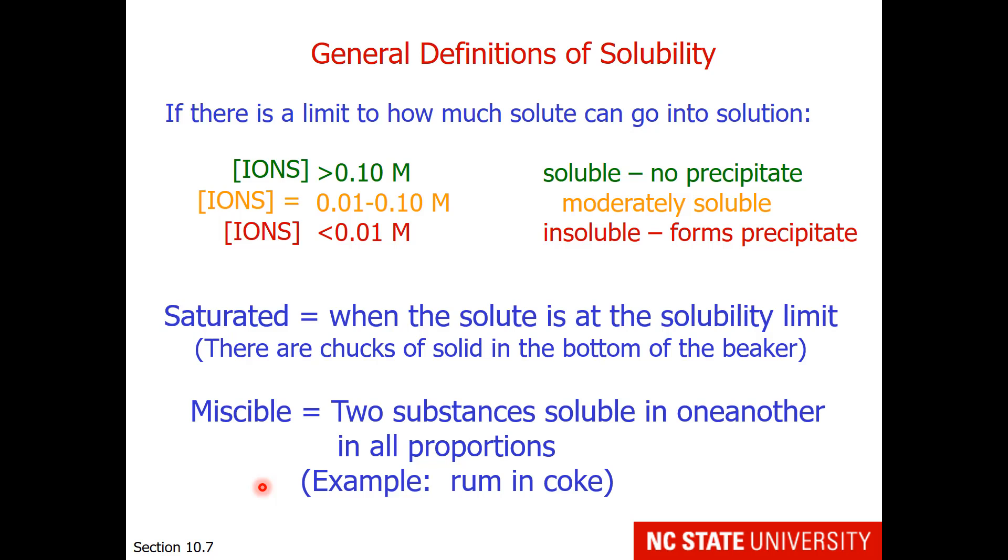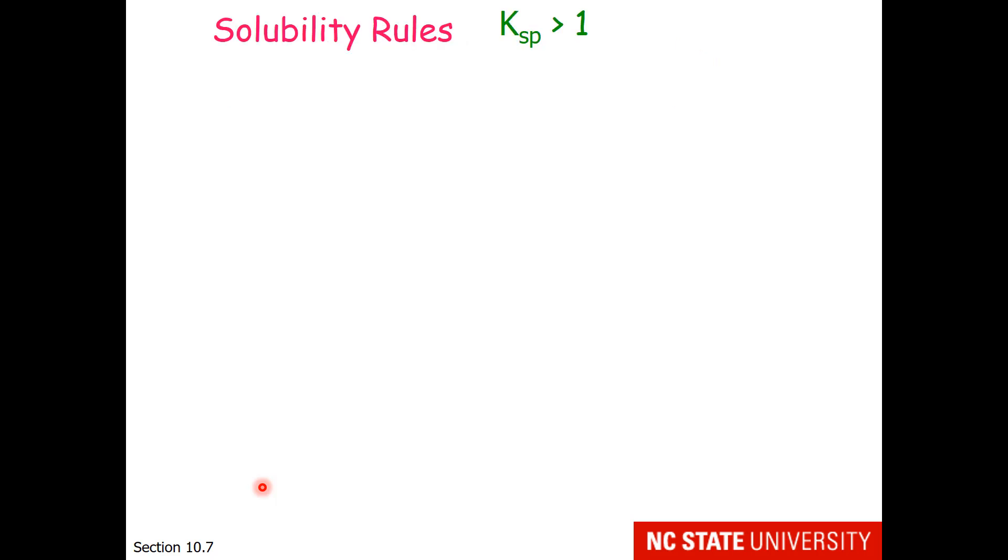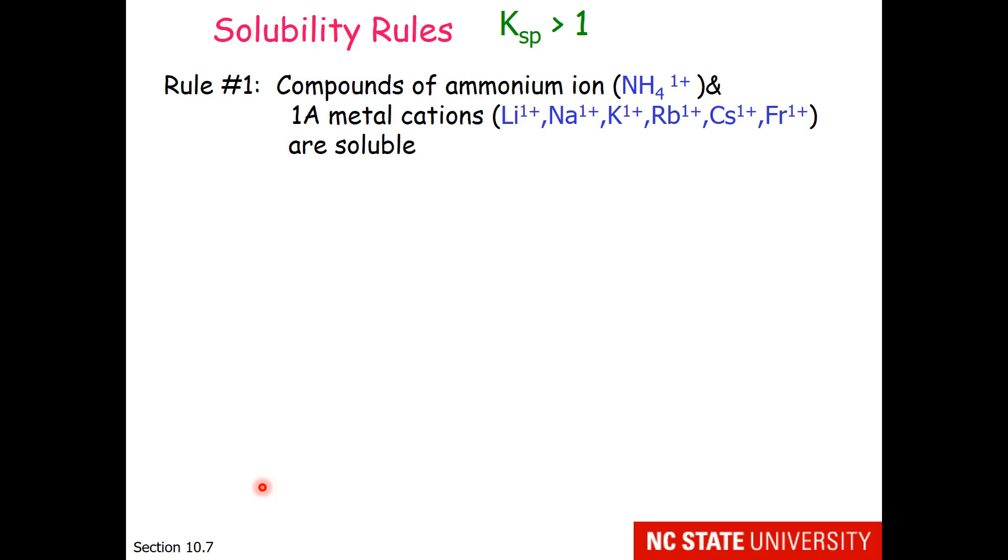These are what's known as the solubility rules, which means Ksp is greater than 1, and they dissolve when placed in water. Please don't be worried that you need to memorize the solubility rules. They will be on the formula sheet that you are allowed for test 4. Your job is to apply these rules correctly. Rule number 1: Compounds of ammonium ion and 1A metal cations are soluble. You notice these are materials that have a very low positive charge, and these are all the ions that form from column 1 of the periodic table.